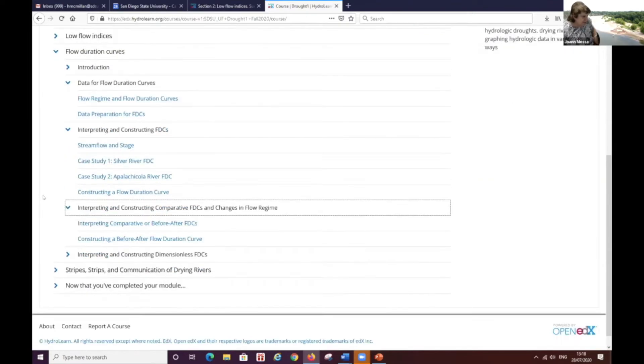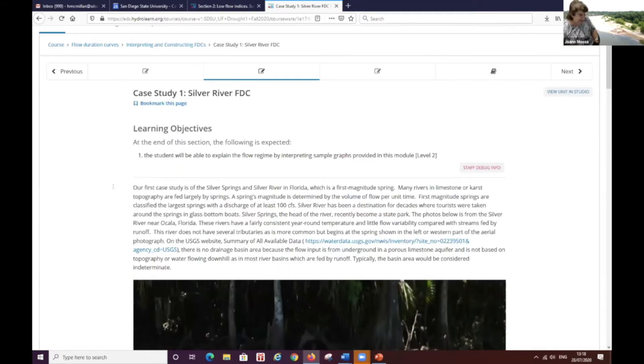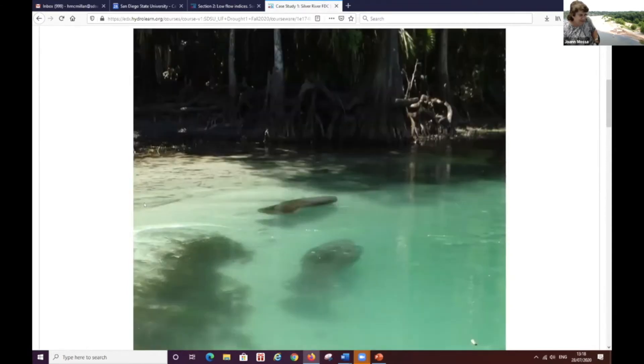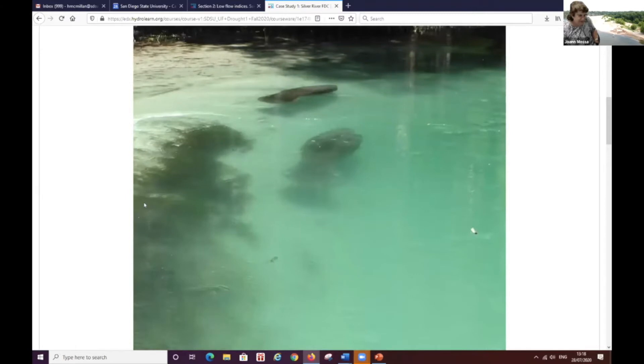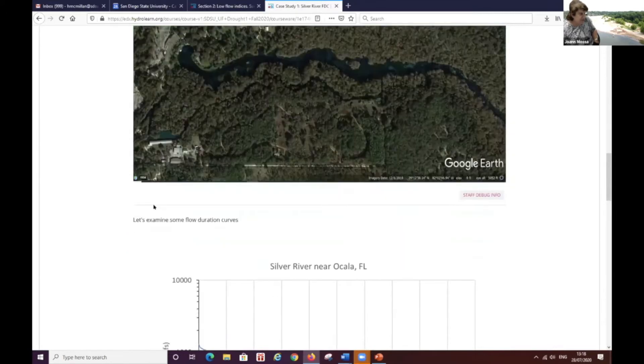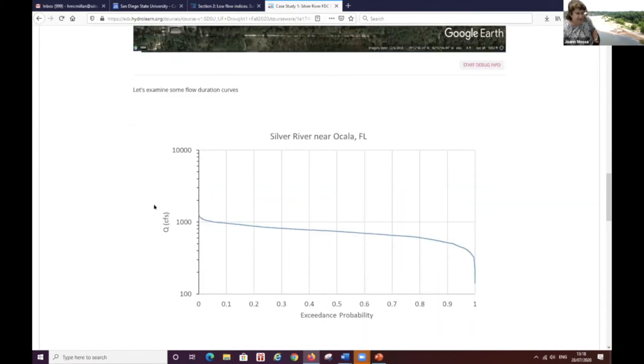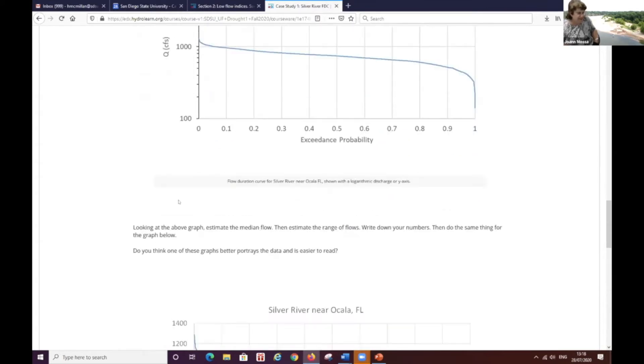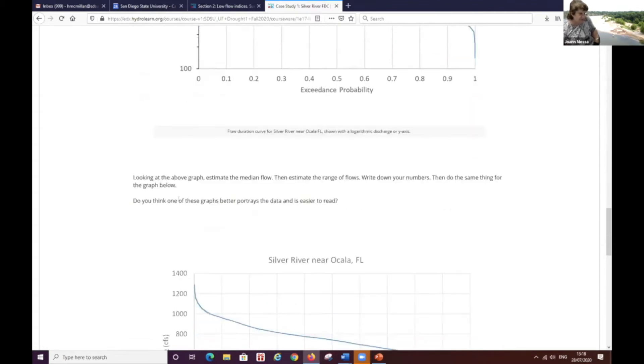And one of the sort of take home messages for students is you can have rivers in a very humid climate like Florida and these rivers can be drying due to, in this case, human activities. And so the Silver River is a spring-fed river and Hillary is going down and showing kind of some of the story and graphics. So it actually doesn't have any measurable drainage area because it's fed by groundwater. And so we have some sample flow duration curves of this and then the other river, which is the Apalachicola River, which has a large watershed.